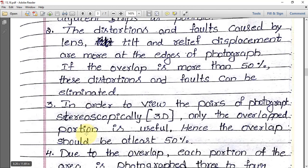The third point is that in order to view pairs of photographs stereoscopically—that is, in 3D—only the overlapped portion is useful. Hence, the overlap should be at least 50%. To get a 3D view, you need the same object in two images. If there is overlap, the previous photograph and the next photograph both have the same area. When you see them through a stereoscope, you can get a stereoscopic or 3D view. For this purpose, overlap is very important and should be at least 50%.